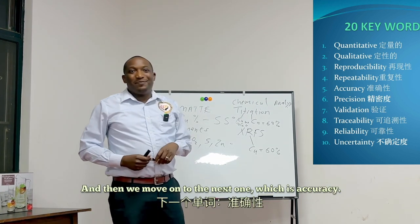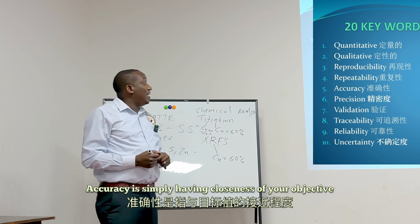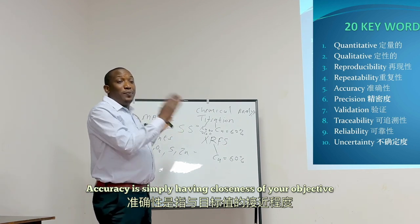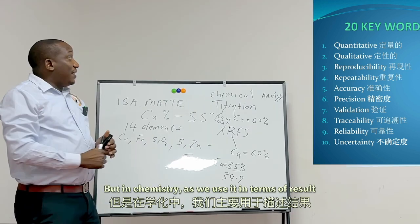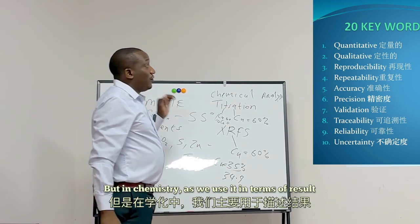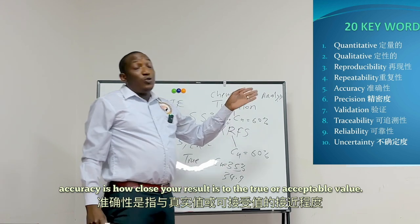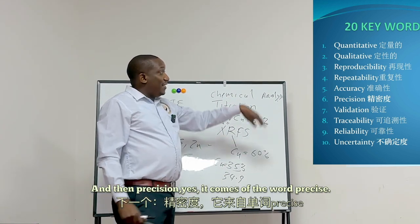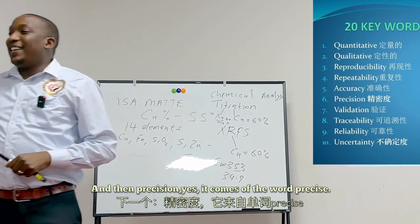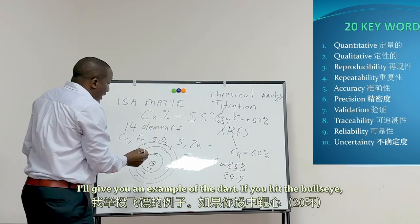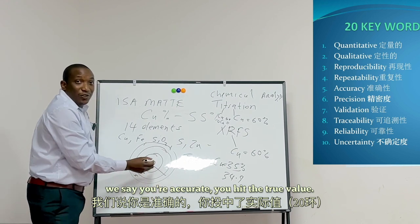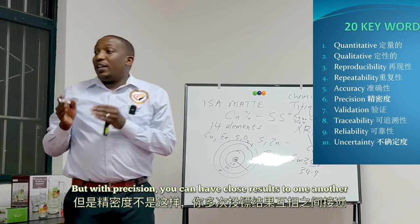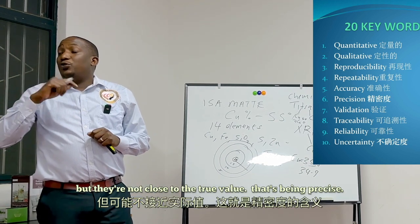The next word is accuracy. Accuracy is the closeness of your result to the true or acceptable value. Then precision — it comes from the word precise. If you hit the bullseye we say accurate; you hit the true value. But with precision, you can have results close to one another but not close to the true value — that's being precise.